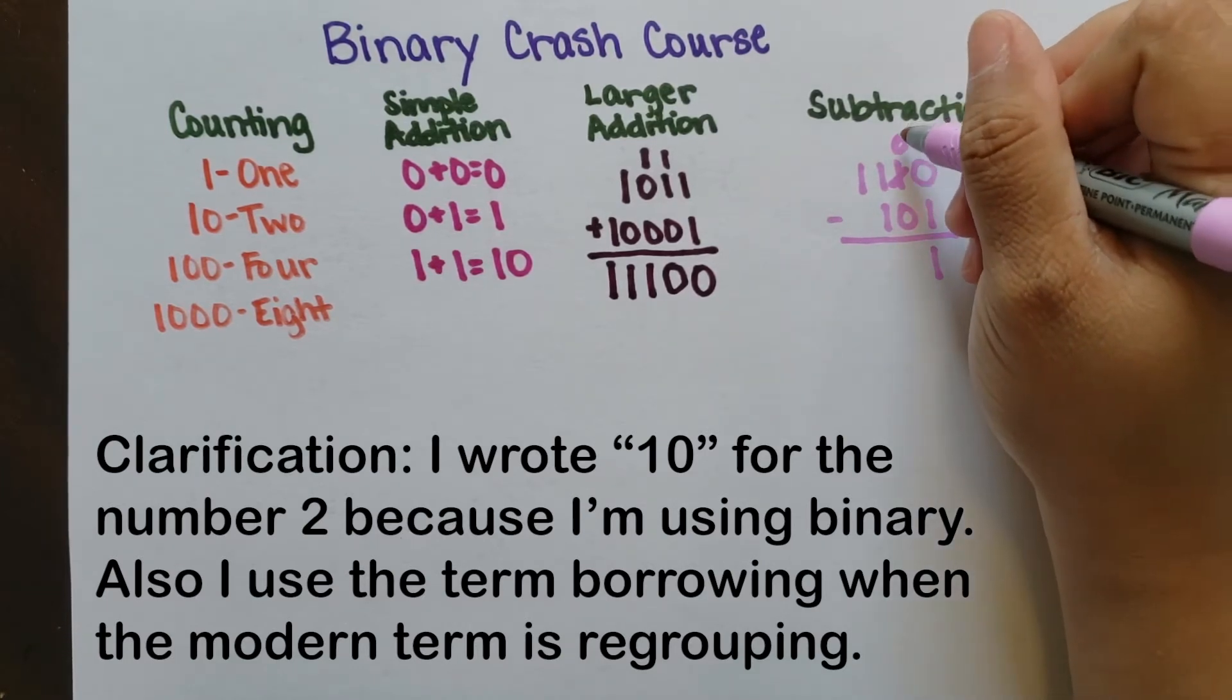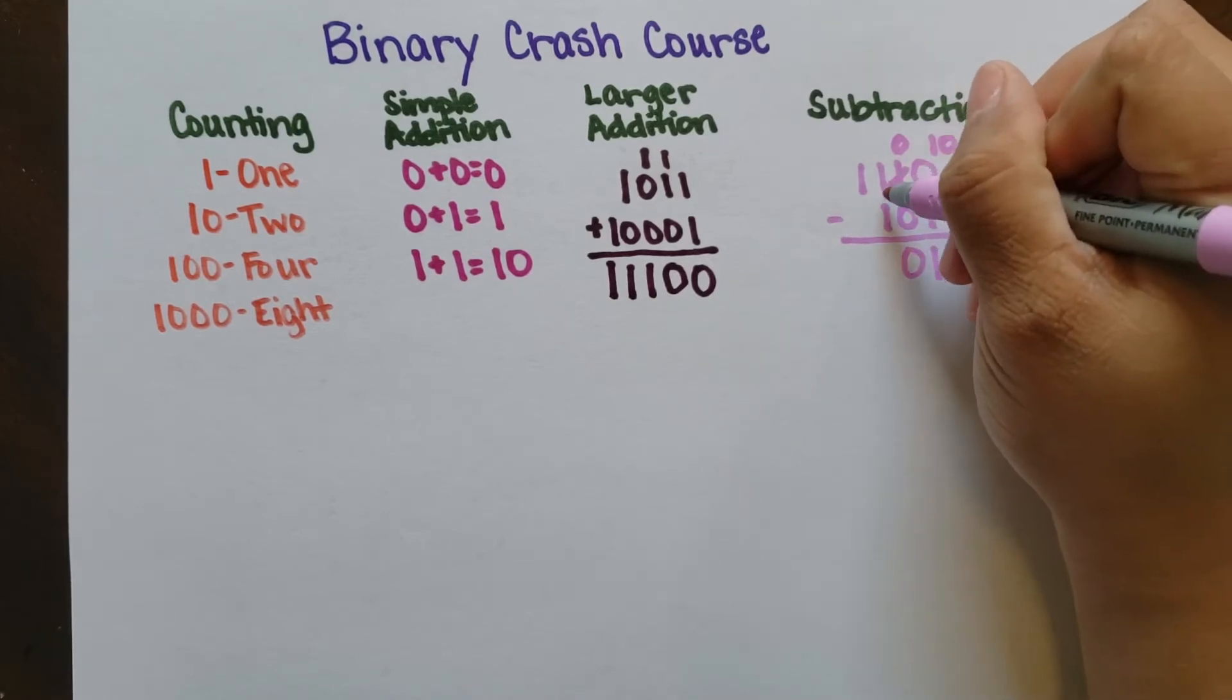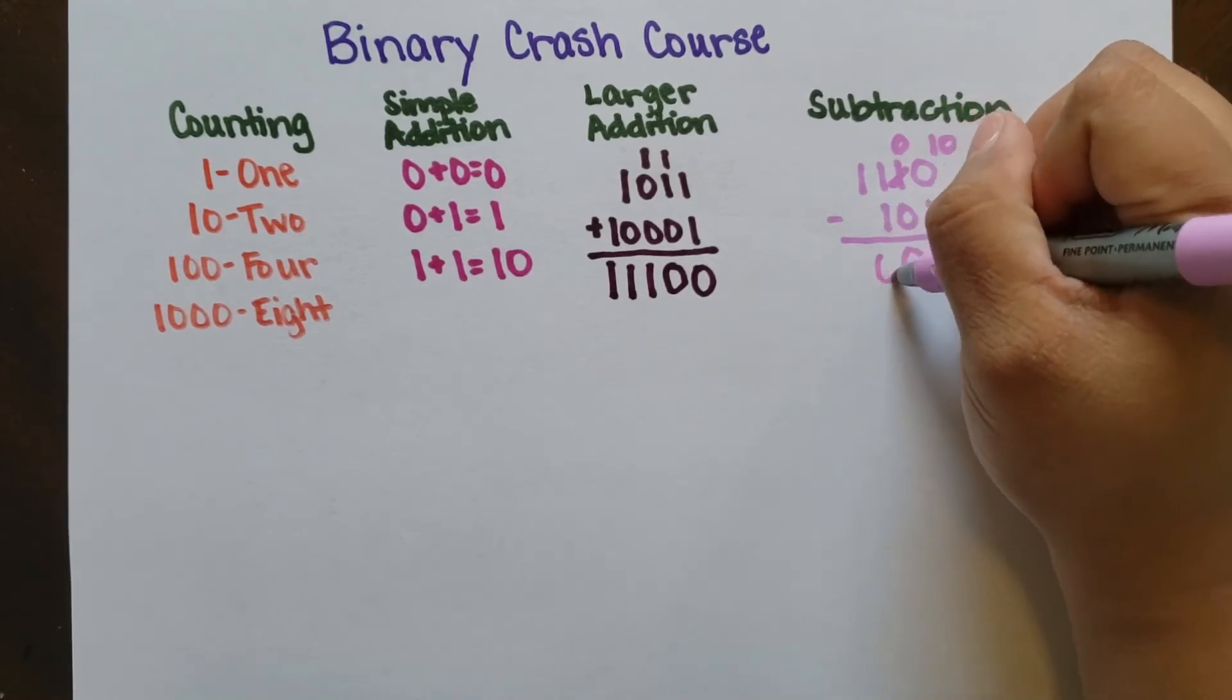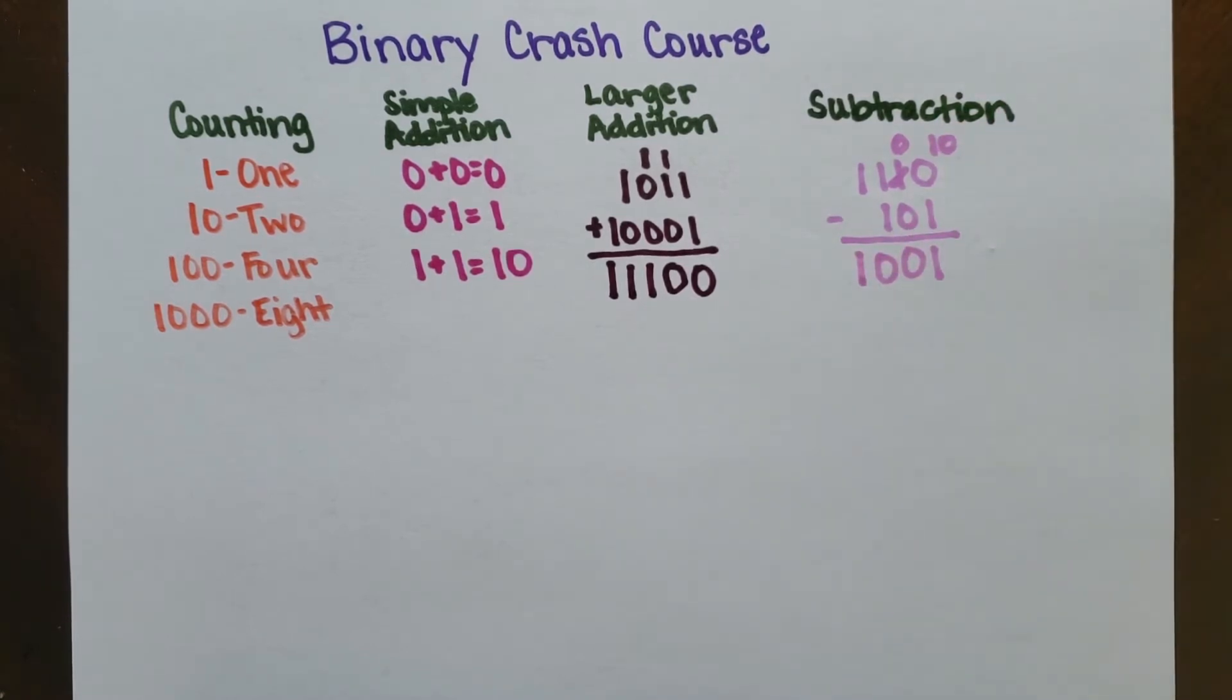Now when we borrowed from that previous digit, that changed to 0, so now we have 0 minus 0, which is just 0. 1 minus 1 would give you 0 as well, and then the final digit would be 1 minus 0, which gives us 1. And so the final answer here is 1001, or 9.